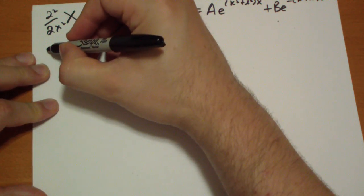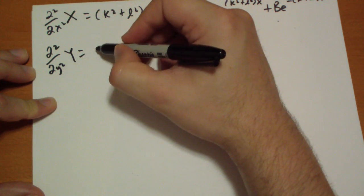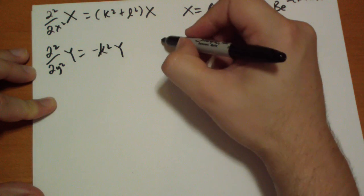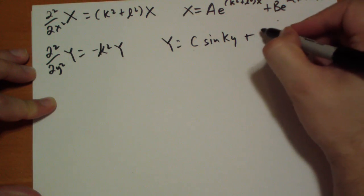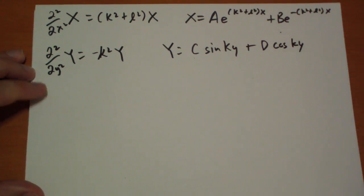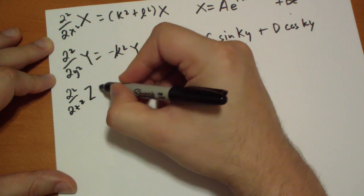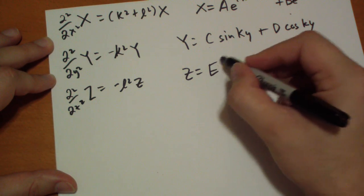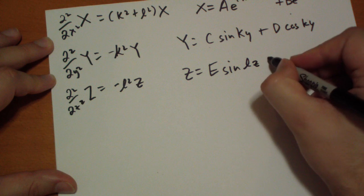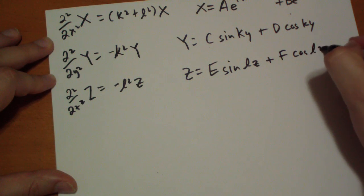Okay. So, y and z. This is minus k squared of y. So, we get y is equal to c sine of ky plus d cosine of ky. And for z, z equals minus l squared of z. So, that means z is equal to e sine of l z plus f cosine of l z.